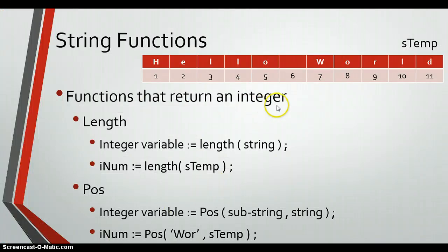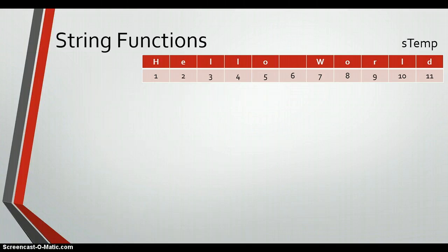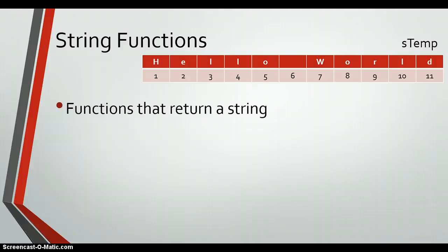So we've got the functions that return integers: Length, which returns how long a string is, and Pos, which takes two strings and returns the position where the first string is found inside the second string. Now the next set of string functions we're going to deal with don't return integers — they return another string. The first one is Copy, which is quite useful for extracting parts of a string.